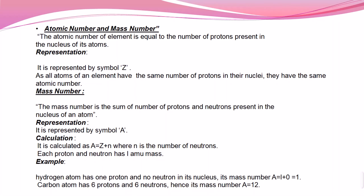To calculate the atomic number and the mass number: the atomic number Z is equal to the number of protons. When talking about the mass number, it includes the number of neutrons present in the nucleus as well as the number of protons. So the mass number A is equal to Z (the atomic number) plus N, where N is the number of neutrons present in any atom.